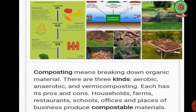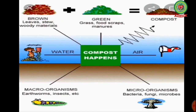Composting means breaking down organic material. There are three kinds: aerobic, anaerobic and vermicomposting — each with its own pros and cons. Households, farms, restaurants, schools, offices and places of business all produce compostable materials. The composting process uses brown leaves, woody materials, green grass, food scraps and manures, which are broken down under the action of bacteria, water, carbon dioxide and microorganisms to finally turn into compost.